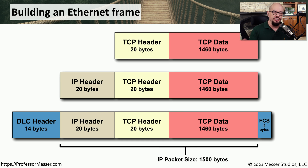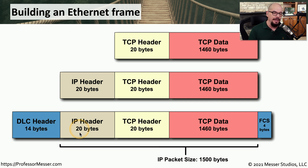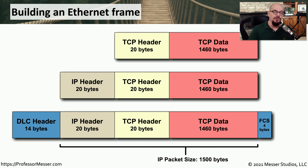Let's take a look at what this fragmentation really means. We've seen before where we've taken some TCP data, put a TCP header in front of it, an IP header in front of that, and finally a DLC header on the outside to send it across our ethernet network. The data from the IP header all the way through to the data being transmitted is our IP packet. The maximum size of an IP packet on an ethernet network is 1,500 bytes. If there's no fragmentation occurring anywhere on the network, you'll be able to send all 1,500 bytes through the network without any of that data being fragmented along the way.